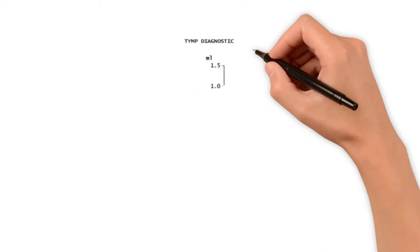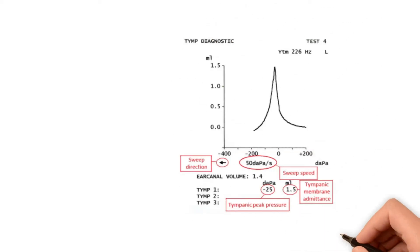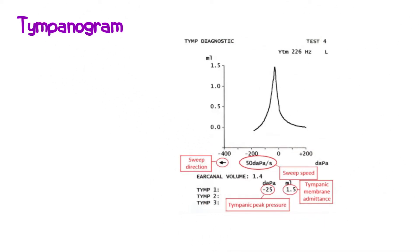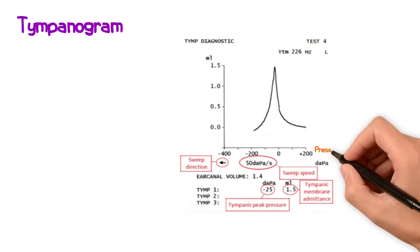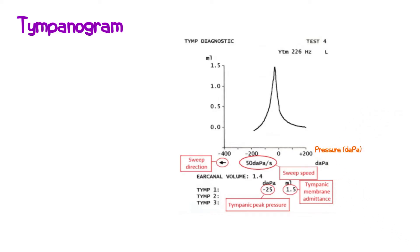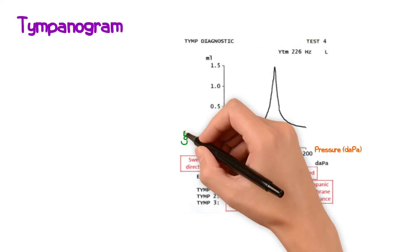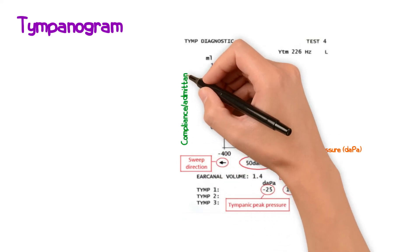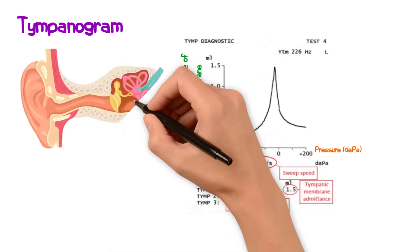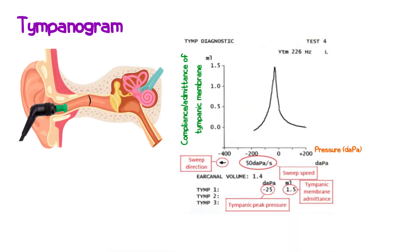The results of tympanometry are plotted on a graph known as a tympanogram, where the x-axis represents the pressure measured in decapascals and the y-axis measures the compliance or admittance of the tympanic membrane — that is, the amount of sound energy admitted into the middle ear.